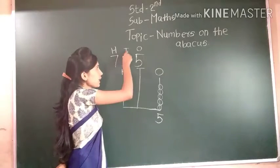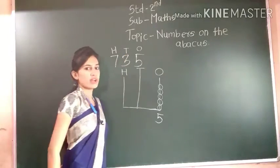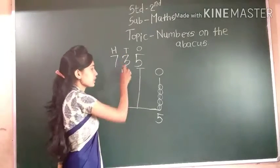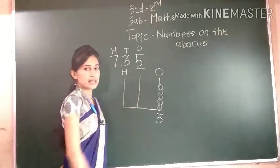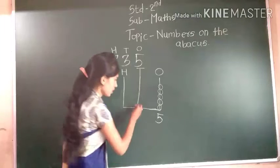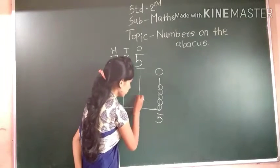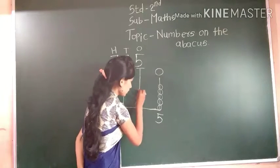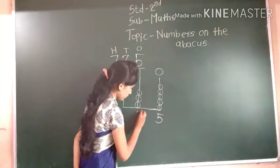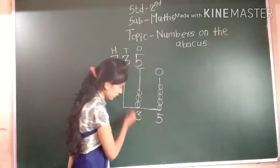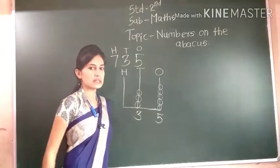3 tens. So we have to draw 3 beads at 10's place: 1, 2, 3. And we write here 3.